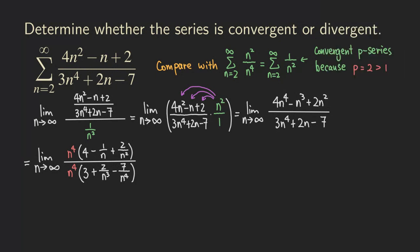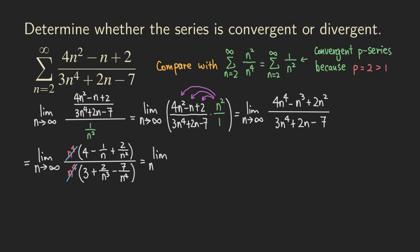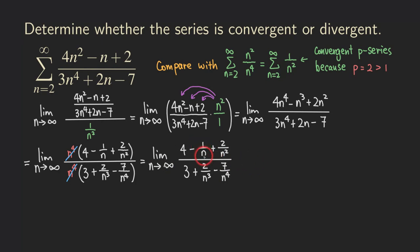Because n is approaching infinity, those two factors of n to the fourth are not equal to zero, so we can just cancel them. What happens is that when n approaches infinity, all those fractions are approaching zero, because you have one over a number that's getting larger and larger. Two over n squared, two over n cubed, seven over n to the fourth — all those fractions approach zero as n gets larger.